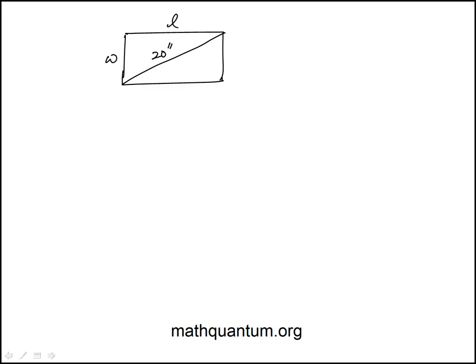So L over W is 4 to 3. Or you can also write this using the multiplier that this is 4x and this is 3x.